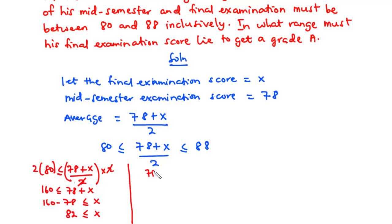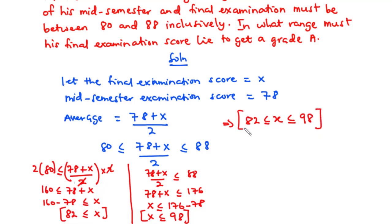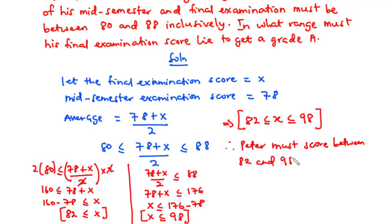For the second part: (78 + x) / 2 ≤ 88, which gives 78 + x ≤ 176. So x is less than or equal to 176 minus 78, giving x is less than or equal to 98. Combining the two solutions: 82 ≤ x ≤ 98. Therefore, Peter must score between 82 and 98 inclusively in his final examination to get a grade A.